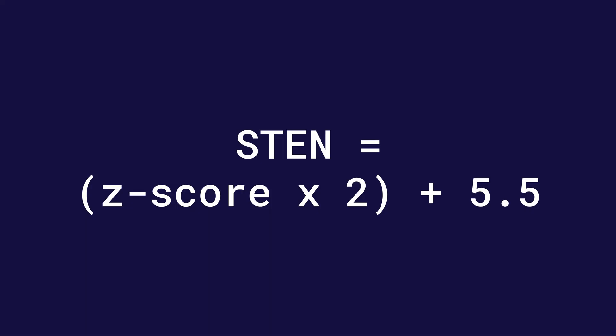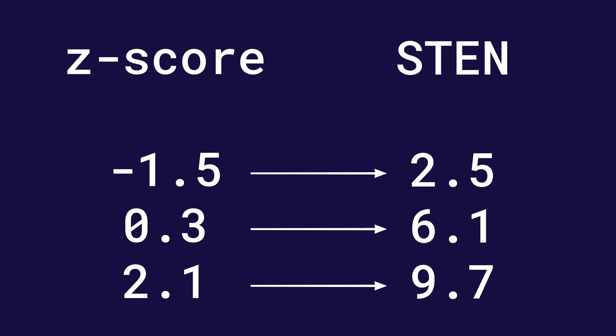So first of all, we're going to take a look at the STEN score. The STEN score is a Standard 10 score. It converts the Z score to between 1 and 10, with 0 — the average — corresponding to a STEN score of 5.5. We calculate the STEN by taking the Z score, multiplying it by 2, and then adding 5.5. Here we have a few examples of Z scores and their corresponding STEN scores, and you can immediately see how the Z scores are transformed into figures that are much more natural to us in this range between 1 and 10.